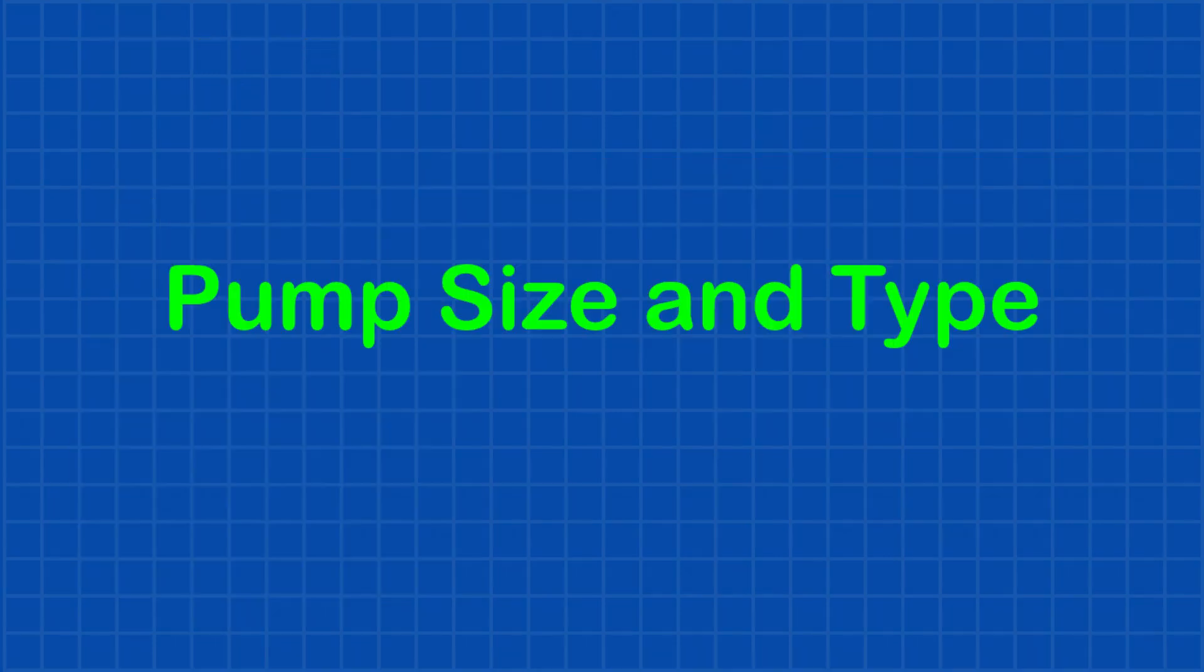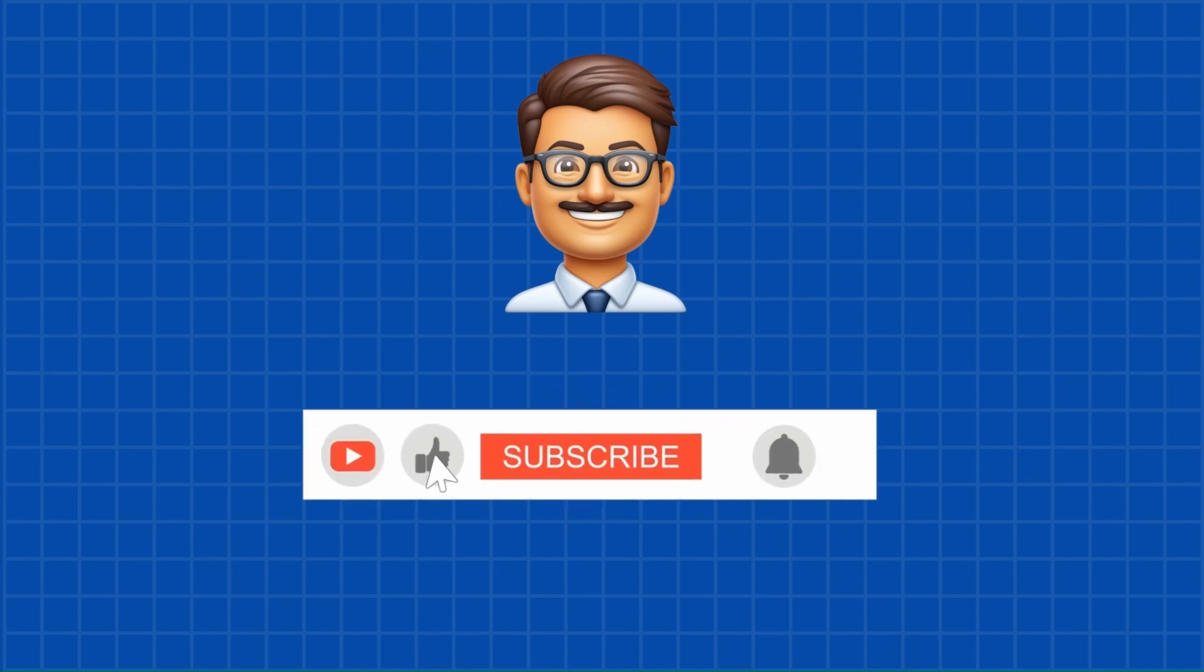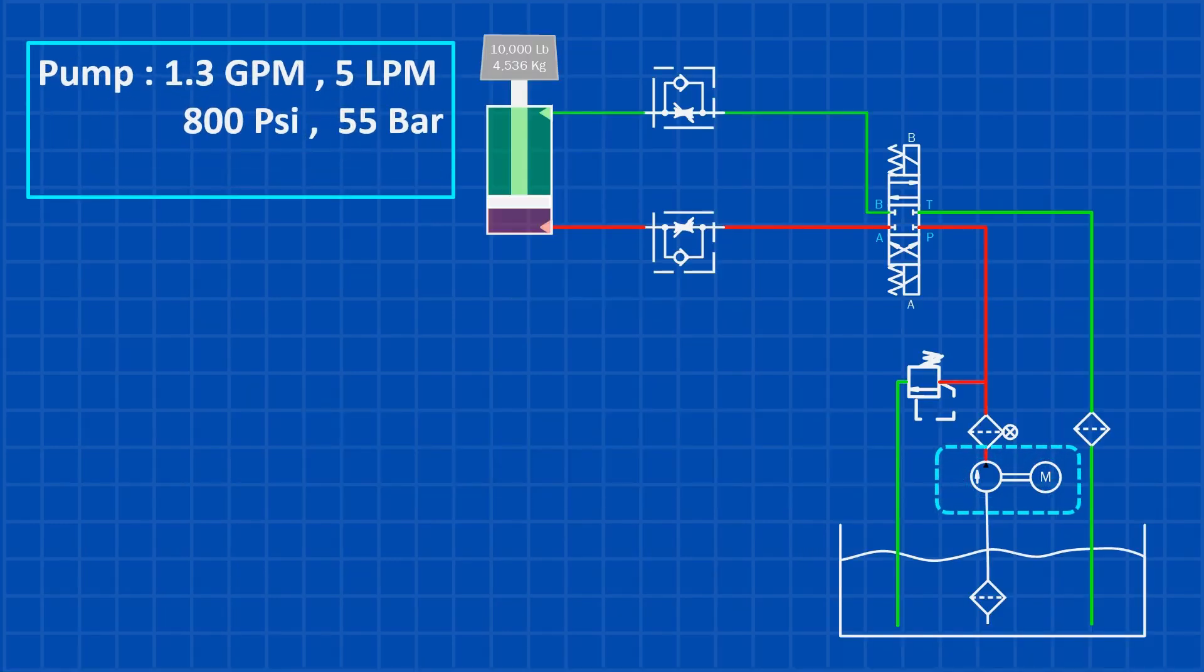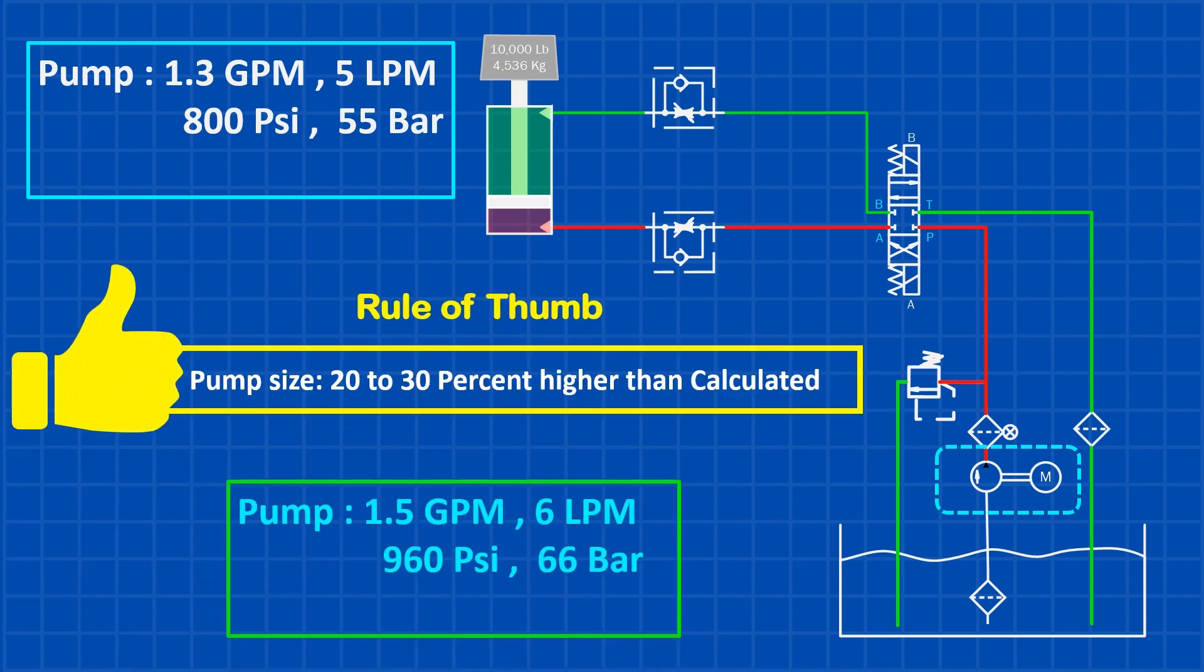Now that we've figured out the flow and pressure, what size and type of pump do we need for this design? But before we jump in, if you find this video helpful, subscribe and turn on the bell notification to stay updated with future videos. For our hydraulic pump, we calculated a requirement of 1.3 gallons per minute or 5 liters per minute at 800 PSI or 55 bar. However, a good rule of thumb is to select a pump that can handle 20 to 30 percent more than the calculated flow and pressure. That means our pump should be rated for at least 1.5 gallons per minute or 6 liters per minute at 960 PSI or 66 bar.